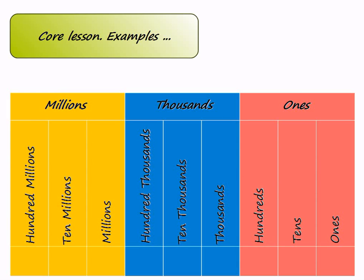Let's place some numbers in a place value chart. We start writing the given number from the right. 5 is at the extreme right corner, so 5 goes at the ones place, then 2 goes at the tens place, and finally 1 goes at the hundreds place.